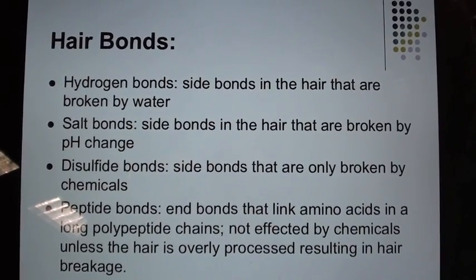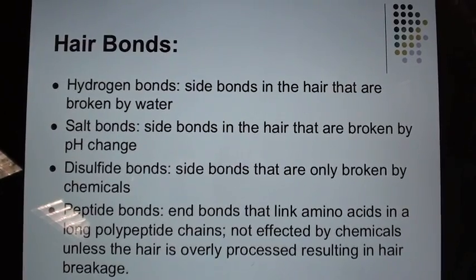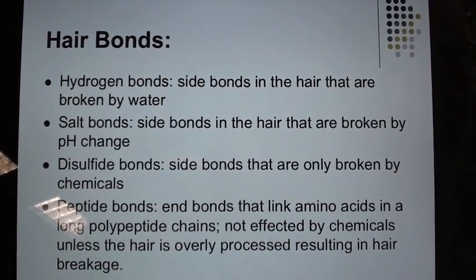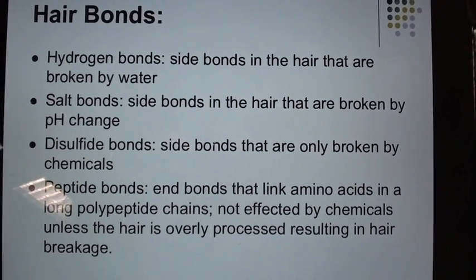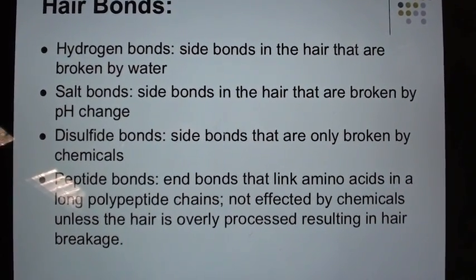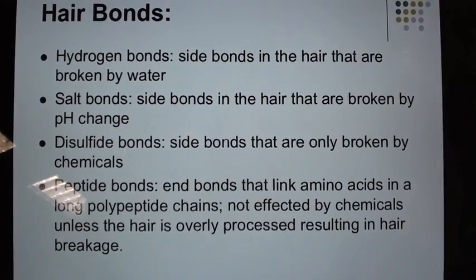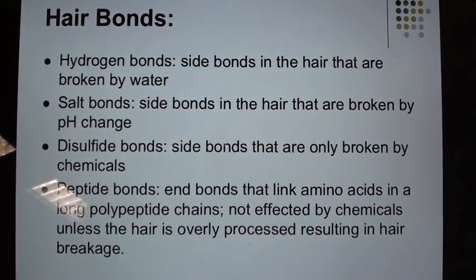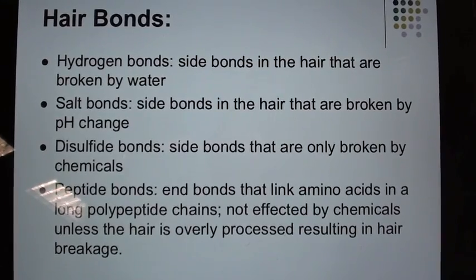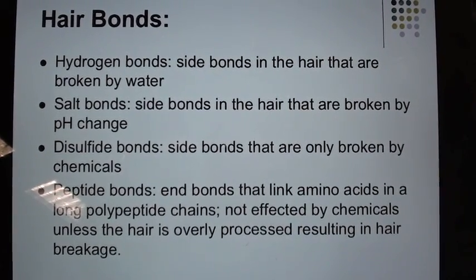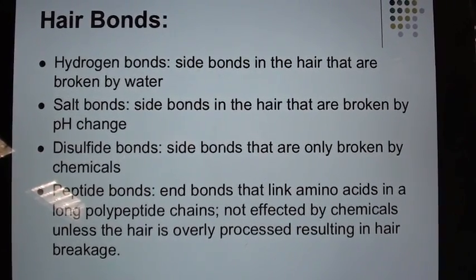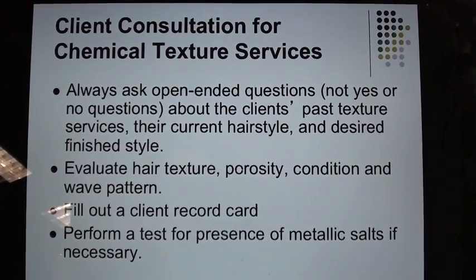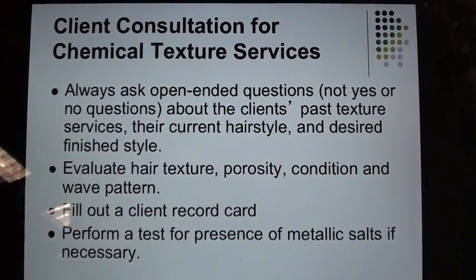Hair bonds: Hydrogen bonds are side bonds in the hair that are broken by water. Salt bonds are side bonds broken by pH change. Disulfide bonds are side bonds that are only broken by chemicals. Peptide bonds are end bonds that link amino acids in long polypeptide chains, not affected by chemicals unless the hair is overly processed, resulting in hair breakage.